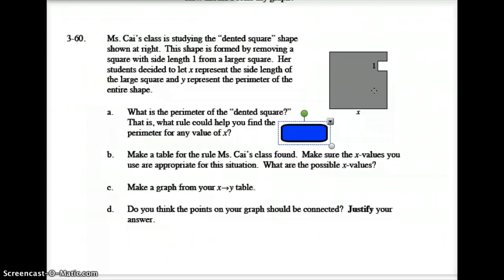Miss K.I.'s class is studying the dented square. The square is formed by removing a square with a side length of 1 from a larger square. Her students decided to let x represent the side length of the large square and y represent the perimeter of the entire shape.